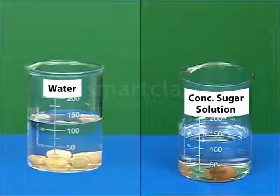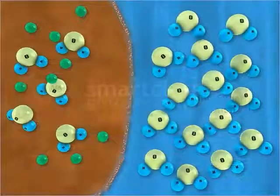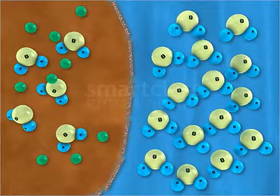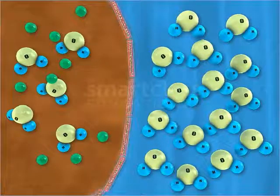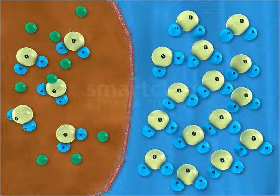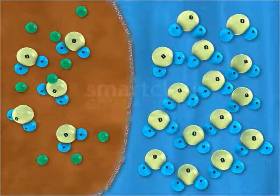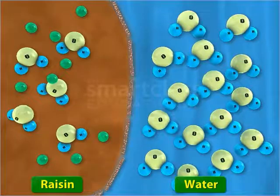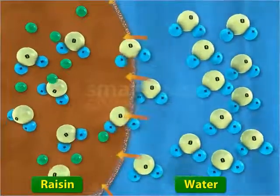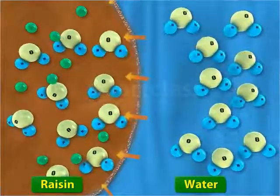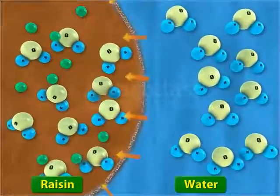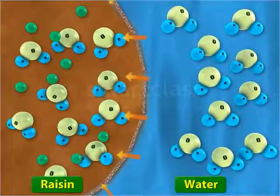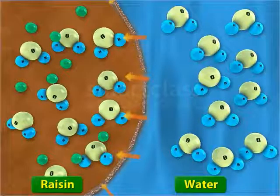Now that you have observed the changes in both cases, let us look at the explanation for these changes. In this activity, the raisin resembles a cell and its outer membrane acts as a semi-permeable membrane which allows water molecules to move through it. Consider the first case where the raisins were kept in water. The water has a higher solvent concentration than the solvent concentration inside the raisins. Due to this difference in concentration, an osmotic gradient is set up which results in water molecules moving from the water into the raisins. This type of osmosis is also known as endosmosis.